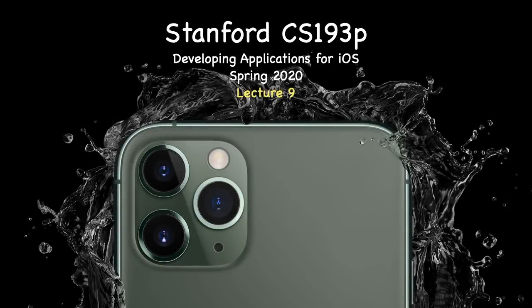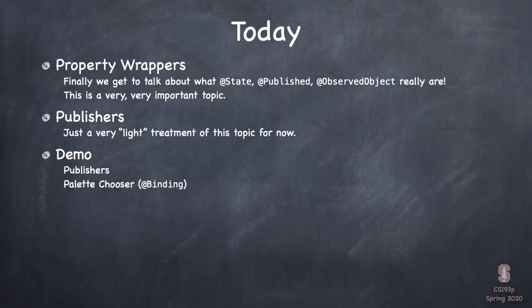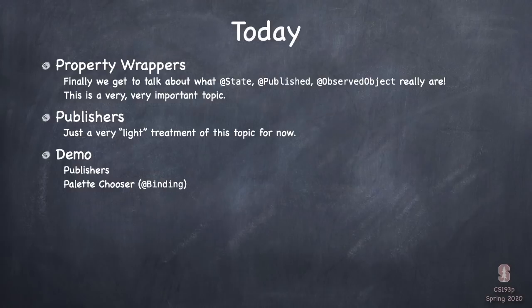Stanford University. We are back, lecture nine, Stanford CS193P Spring of 2020. Today we are going to talk about a super important topic: property wrappers. We're finally gonna understand what things like @State and @Published are really doing under the covers. We're gonna talk about publishers, and we'll dive into a demo covering publishers, @Binding — a new property wrapper you're gonna learn about in these slides.